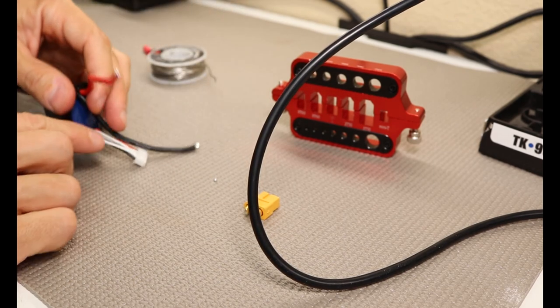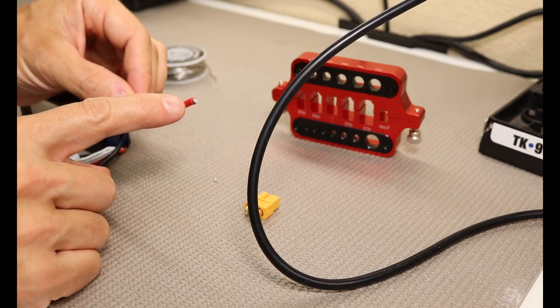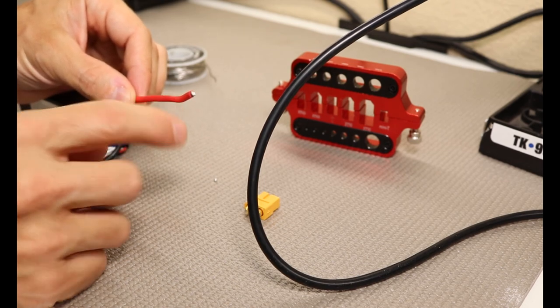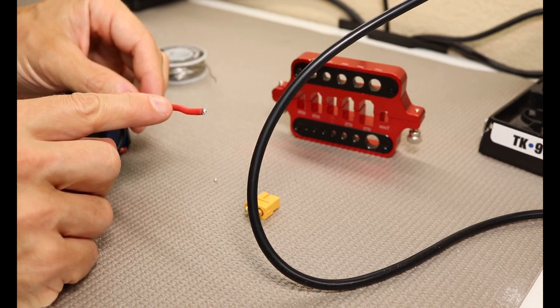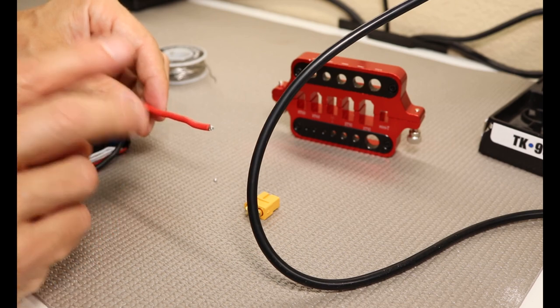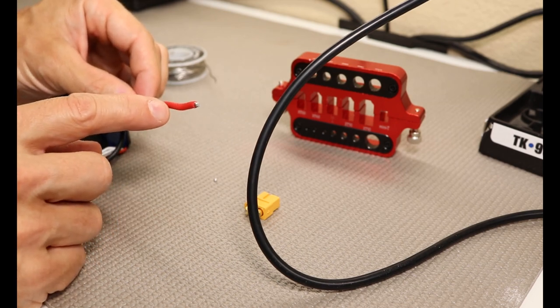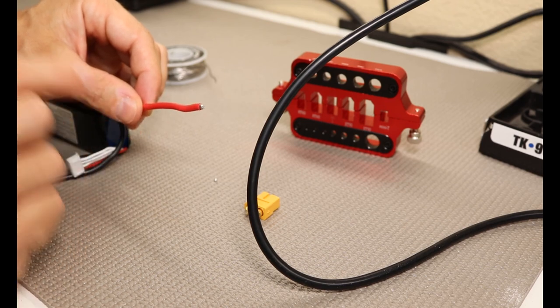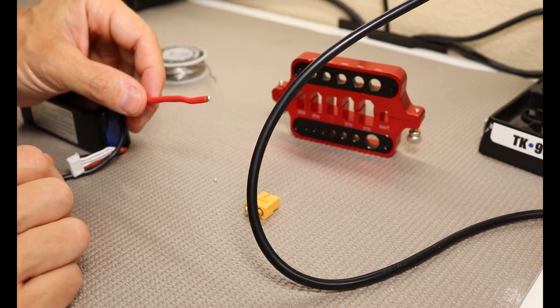So one of the other things that we always like to recommend is even though these wires are already tinned from the previous solder that was on here, sometimes the solder that's on there is a different composition than the solder that you're working with. And we often see where sometimes two different solders don't always mix that well. So even though this is tinned, it's not a bad idea to go ahead and tin this wire with a solder that you're going to be using. That just helps ensure a nice, clean, easy solder joint.